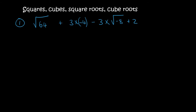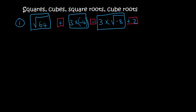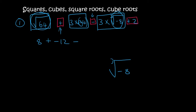Here's question 1. We can break it up: do this part by itself, this part by itself, and this whole part by itself, then leave the plus, minus, and plus 2 for the end. The square root of 64 — what times what gives you 64? That's 8. Then the next block: 3 times 4 with one negative gives minus 12. Then there's a negative, and the cube root of minus 8 — what times what times what gives minus 8? That's minus 2. So 3 times minus 2 is minus 6.